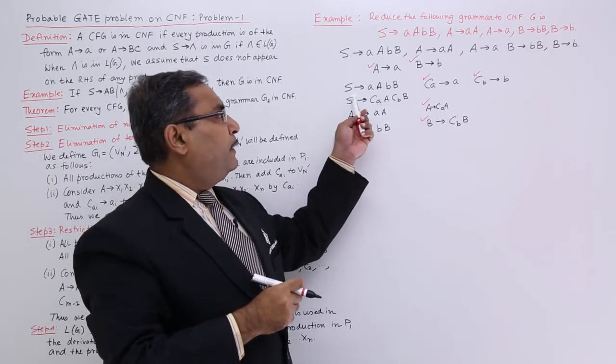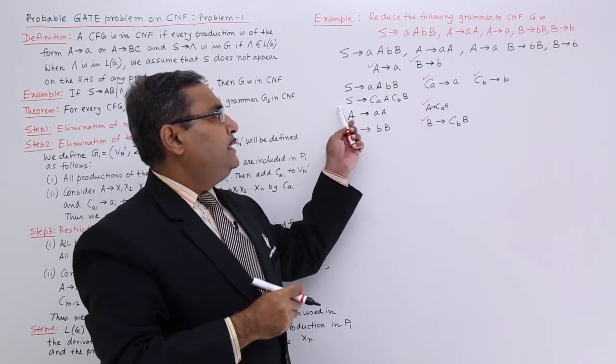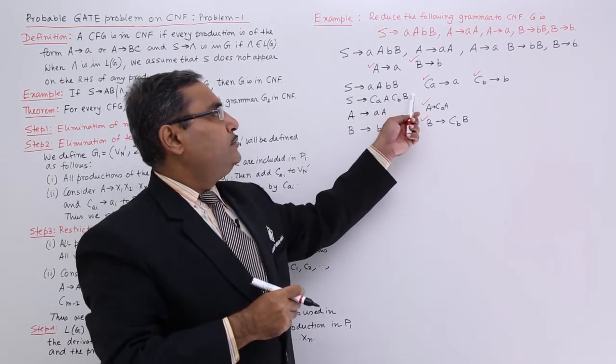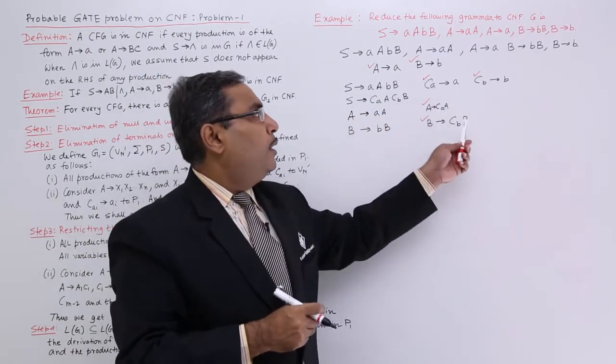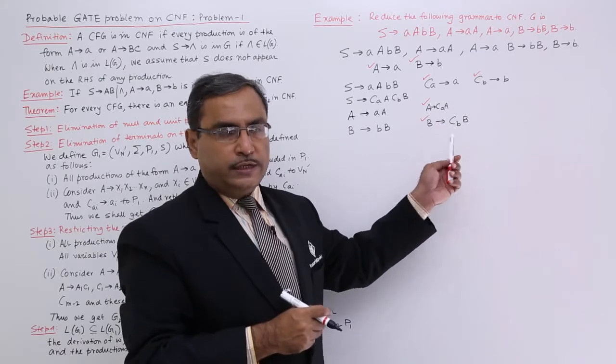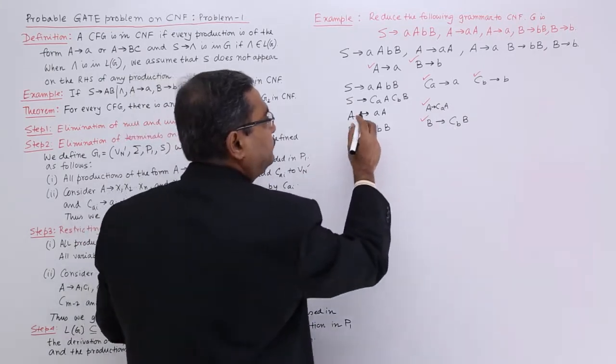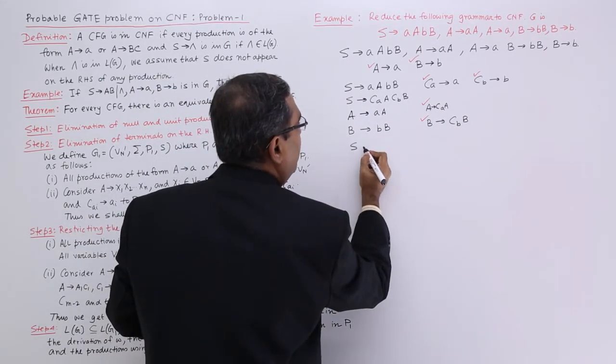Only this particular S produces CA CB is not in Chomsky's normal form, and whatever the rest we have done, we have done the respective considerations. Now I am going for step 3.